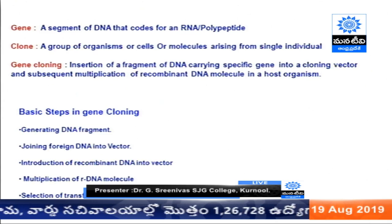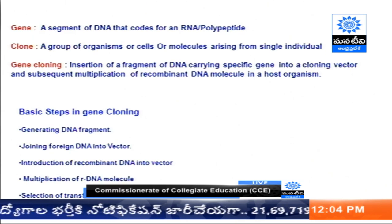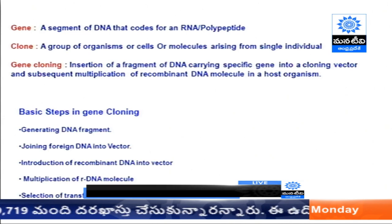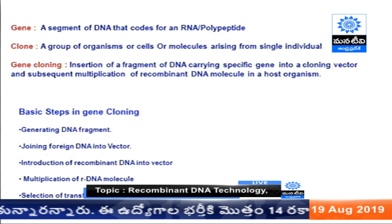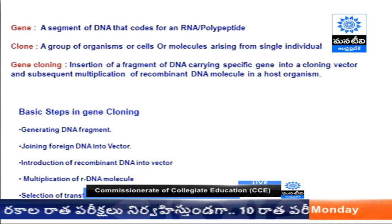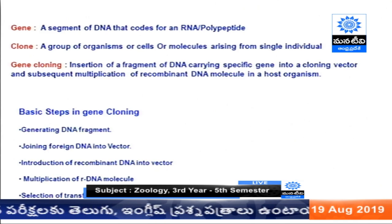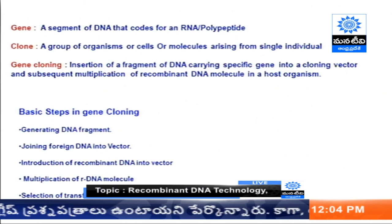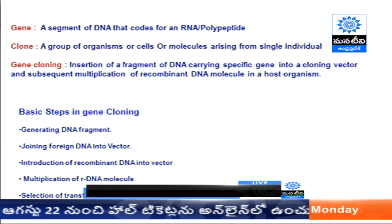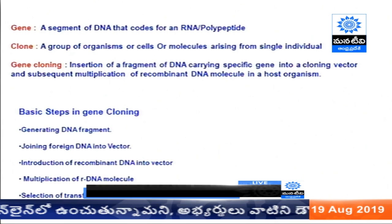Gene cloning is a wider spectrum in present biotechnology with different steps. It varies from species to species, but gene cloning has a specific process involving rDNA technology: you select the DNA, join the DNA with the vector, introduce the vector into a specific host, amplify the host or bacteria, and select the required transformants. These are the basic steps of rDNA technology.